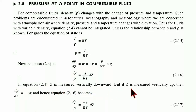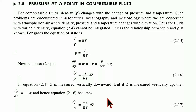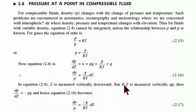If z is measured vertically upward, then dp/dz equals minus rho·g — hence the minus sign — and equation 2.16 becomes equation 2.17: dp/p equals minus g·dz divided by RT. The difference between equation 2.16 and 2.17 is the sign: 2.16 has a positive sign because z is measured vertically downward, while 2.17 has a negative sign because z is measured vertically upward.